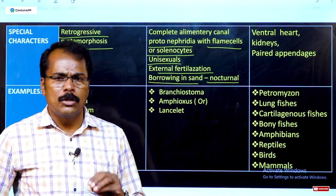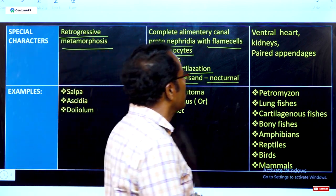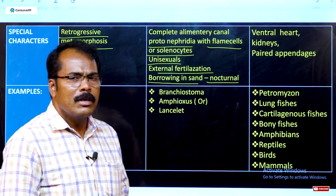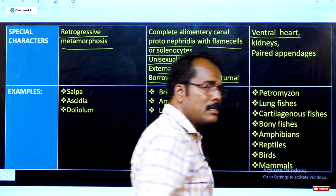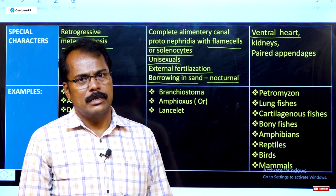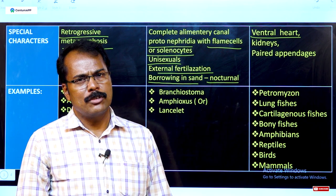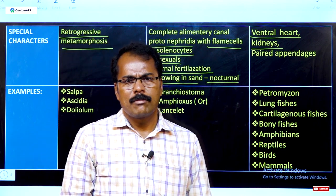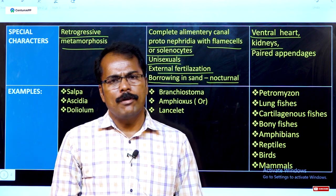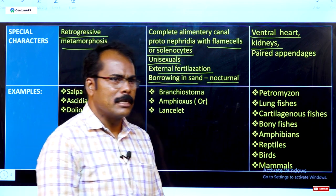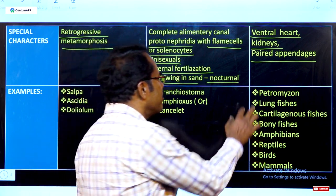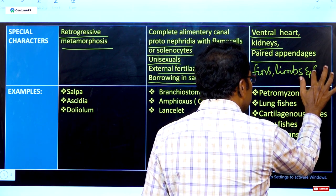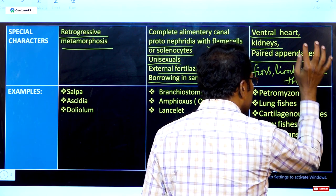In Vertebrata, all vertebrates have a heart present on the ventral side — two-chambered in fish, three-chambered in amphibia, and four-chambered in reptiles, birds, and mammals. There is also a well-developed metanephric kidney with nephridia for osmoregulation and excretion. Paired appendages such as fins, limbs, and feathers are also found in vertebrates.